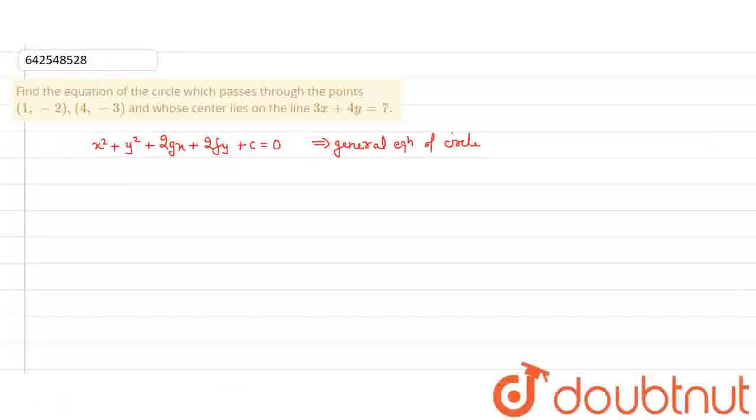Here we have a question: Find the equation of a circle which passes through this point and whose center lies on this line. I have already written the general equation of a circle.